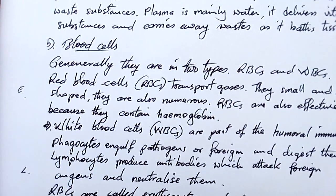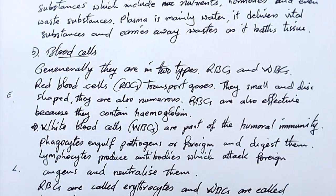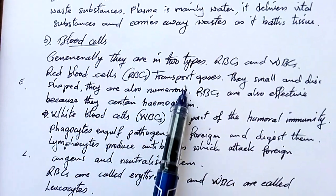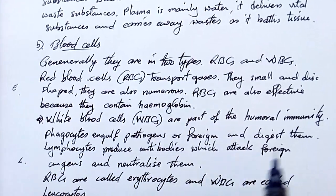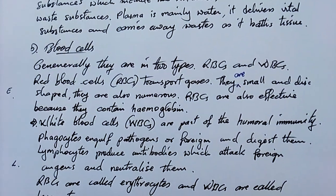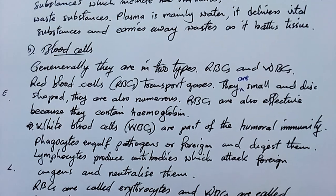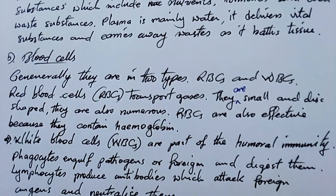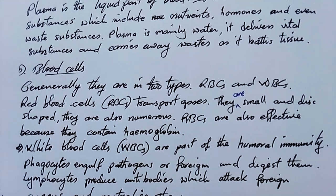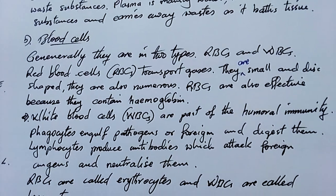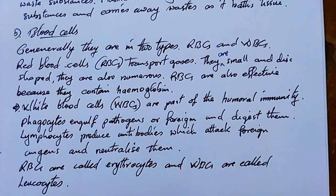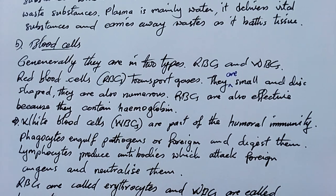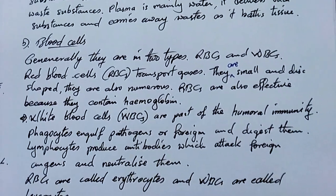Blood cells are divided into two groups: white blood cells (WBCs) and red blood cells (RBCs). Red blood cells transport gases — both oxygen and carbon dioxide. They are small, disc-shaped, and numerous. RBCs contain hemoglobin, which binds to oxygen forming an unstable compound called oxyhemoglobin. The amino acids of hemoglobin also bind to carbon dioxide, forming carbaminohemoglobin. RBCs are small and disc-shaped to help them flow properly and deliver gases.